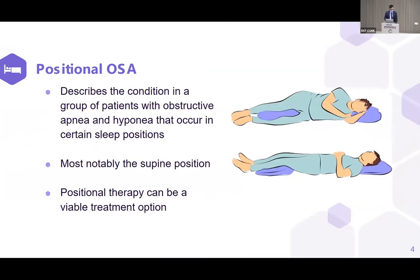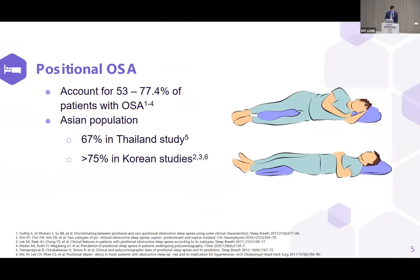Positional OSA describes a condition in a group of patients who have positional obstructive apnea, most notably in the supine position. It accounts for 53 to 77.4% of patients with OSA, and in some Asian studies it has been shown that 67 to 75% of patients with OSA actually have a positional component.